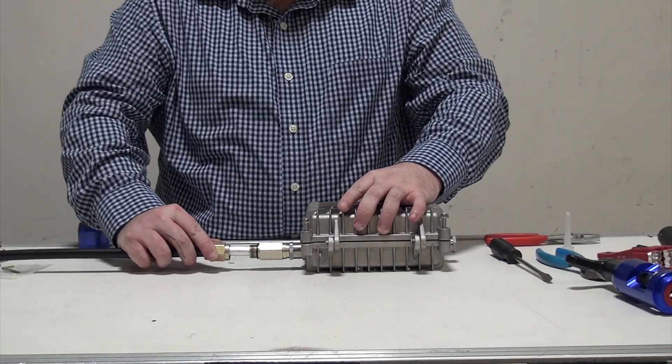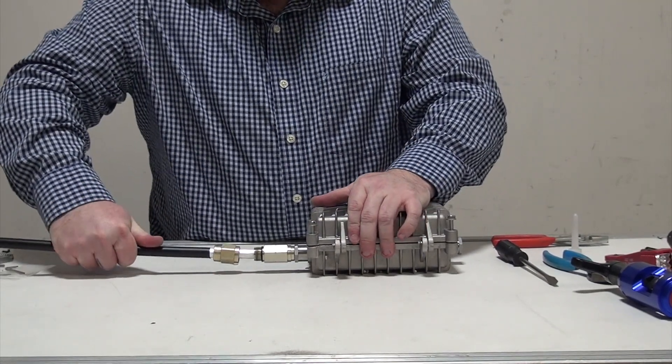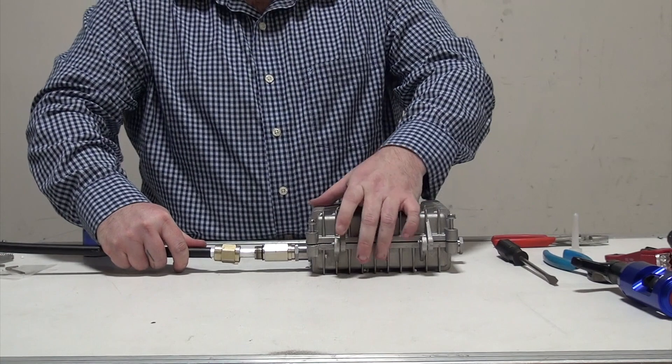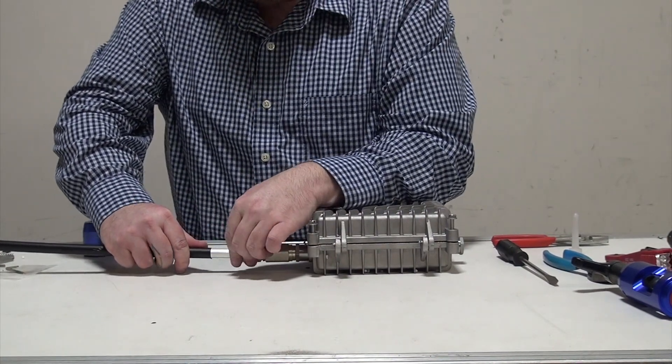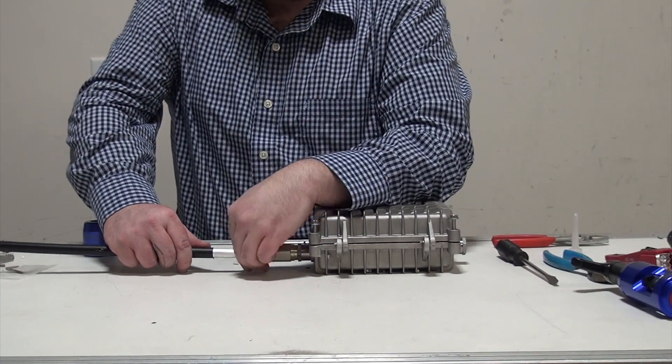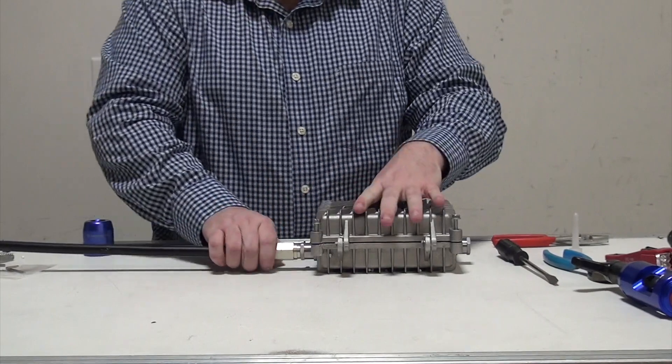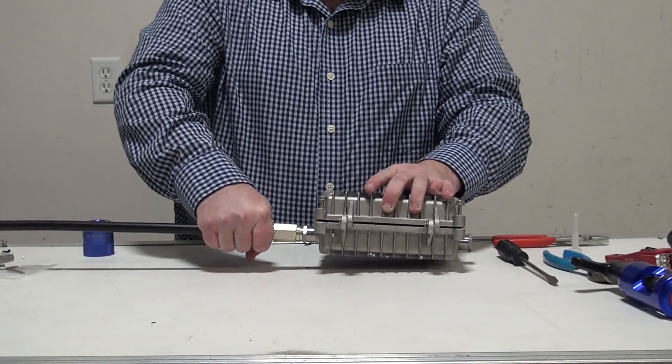Once that's done, we're going to insert our cable into the connector here and ensure it is in there properly. With that done, we're going to tighten back our back screw on here. Make sure it is properly tight.